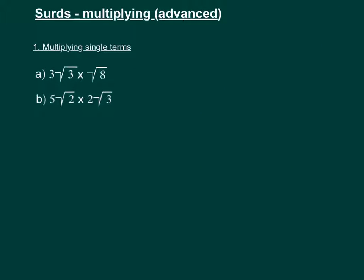In this video we're looking at multiplying surds. The first type we're looking at is where we're multiplying single terms. The second type is where we're multiplying more than one term, which will require us to put them into brackets.